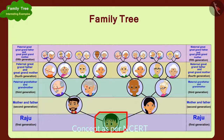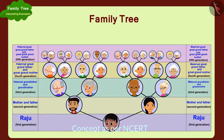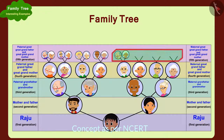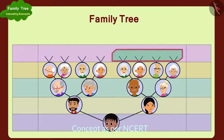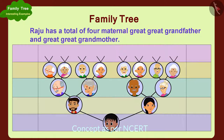Raju's maternal great great grandfather and great great grandmother will be his mother's great grandfather and great grandmother. In this way, these are Raju's maternal great great grandfather and great great grandmother. Raju has a total of four maternal great great grandfathers and great great grandmothers.